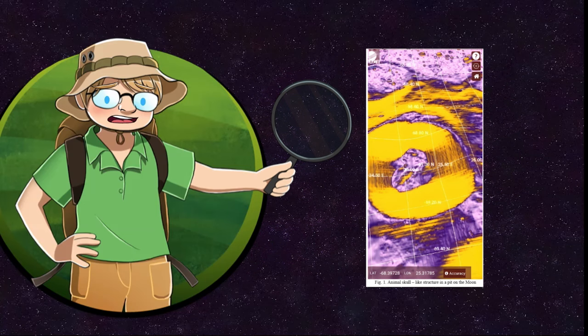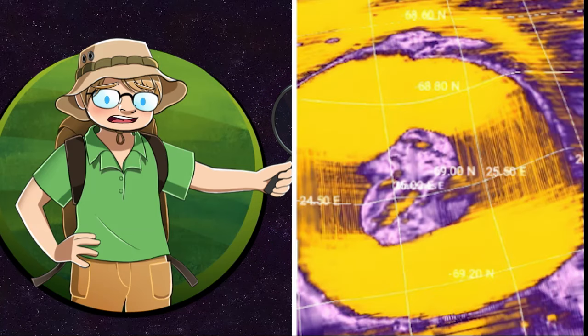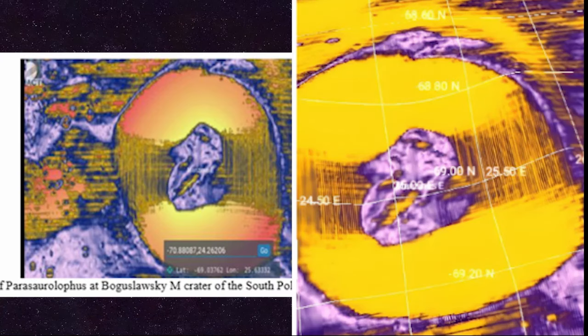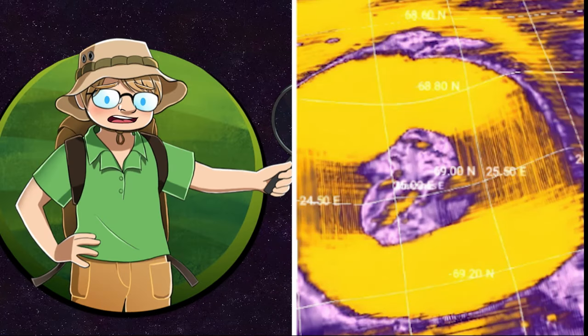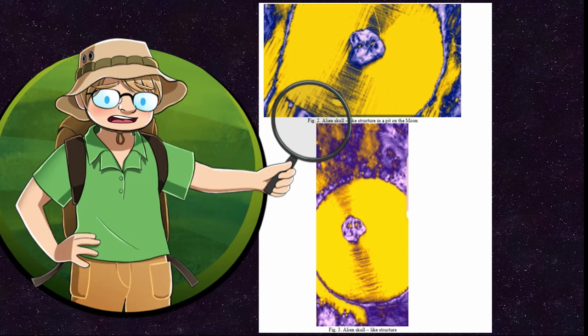Wait, hang on. One of these skulls is the exact same feature that you said in your last paper was an entire Parasaurolophus skeleton. What is it? Is it a Parasaurolophus skeleton, or is it an alien skull? Make your mind up! We then have these other supposed skulls, which... Yeah, let's just say I have no idea what to say here.